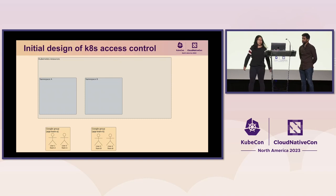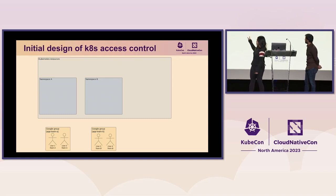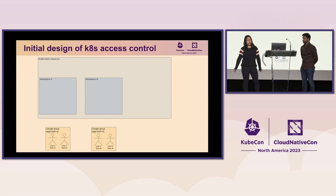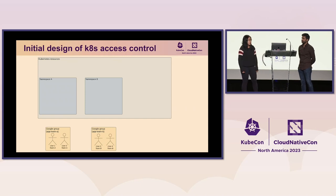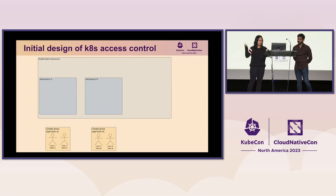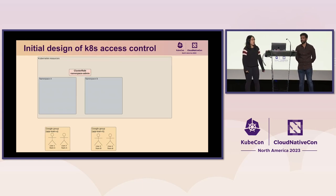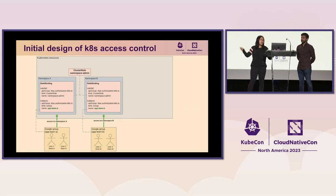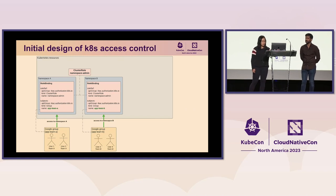In case you can't see it, the top shows the Kubernetes resources, and the two boxes inside are the namespaces. At the bottom, we have Google Groups, because at that point in time that already existed in the company. Each team had a corresponding Google Group used for emailing and Google calendars. We decided to leverage those existing Google Groups to get access to the Kubernetes clusters and associated namespaces. We created a cluster role for namespace admin, which included things a regular application team might need, like managing their pods, and we created a role binding in every single namespace bound to that cluster role using the Google Groups.